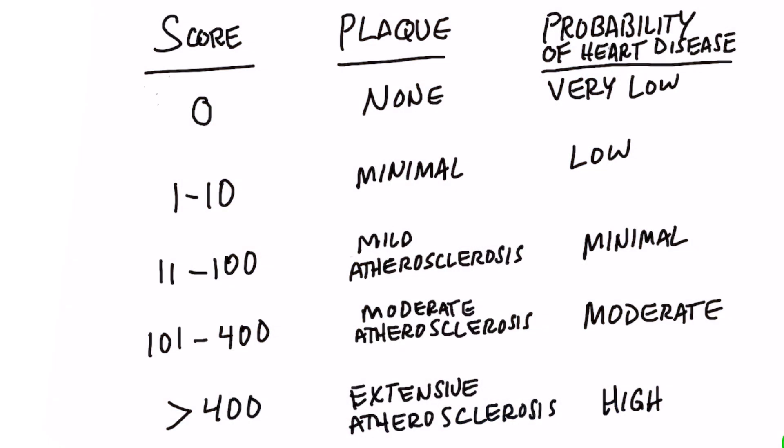I got the test and thank goodness it was zero. If the score is between one and 10, the plaque is very minimal and there's a low chance of getting a heart attack. If the score is between 11 and 100, there's mild atherosclerosis and your probability of getting a heart attack is minimal, but it tells you something is brewing. If your score is between 101 and 400, there's a moderate amount of atherosclerosis and you have a moderate risk of getting a heart attack. If you're over 400, we have extensive atherosclerosis and you have a high chance of getting a heart attack.